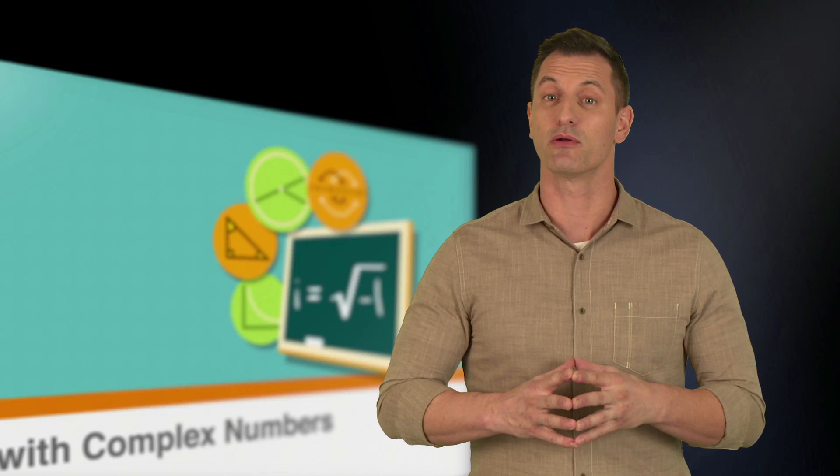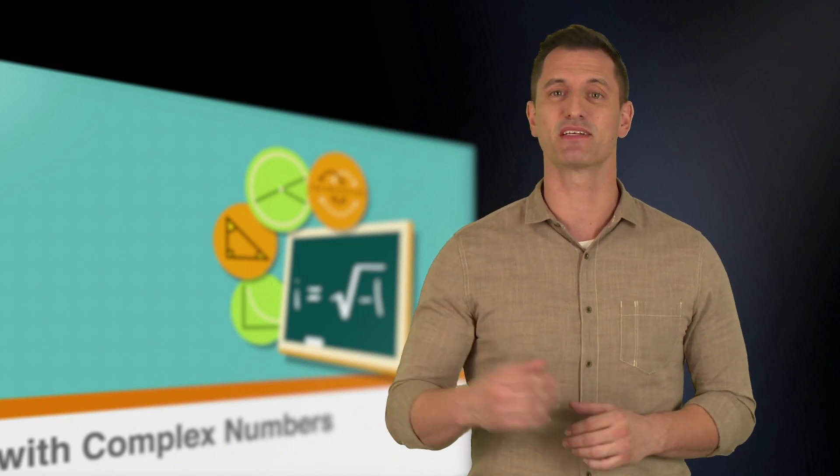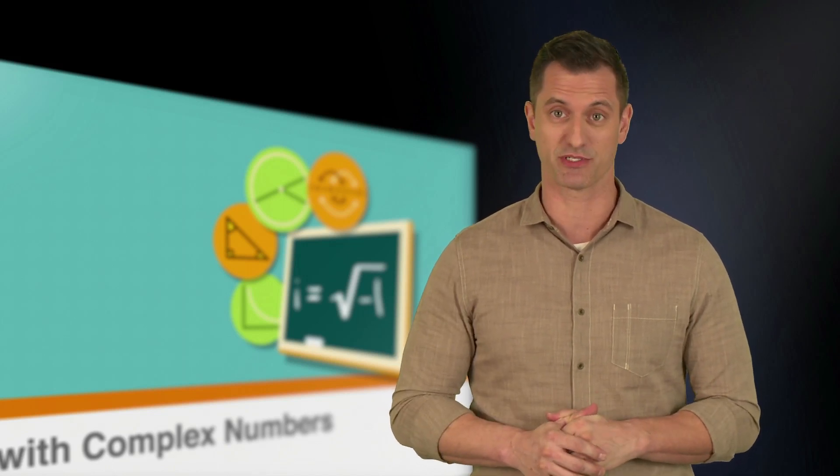Now that we've discussed how to multiply and use exponents with i, it's time to discuss how to multiply complex numbers. Let's start with a reminder. Complex numbers are numbers in the form a plus bi, where a and b are real numbers, and i is the square root of negative 1. One example of a complex number is 2 plus 3i.